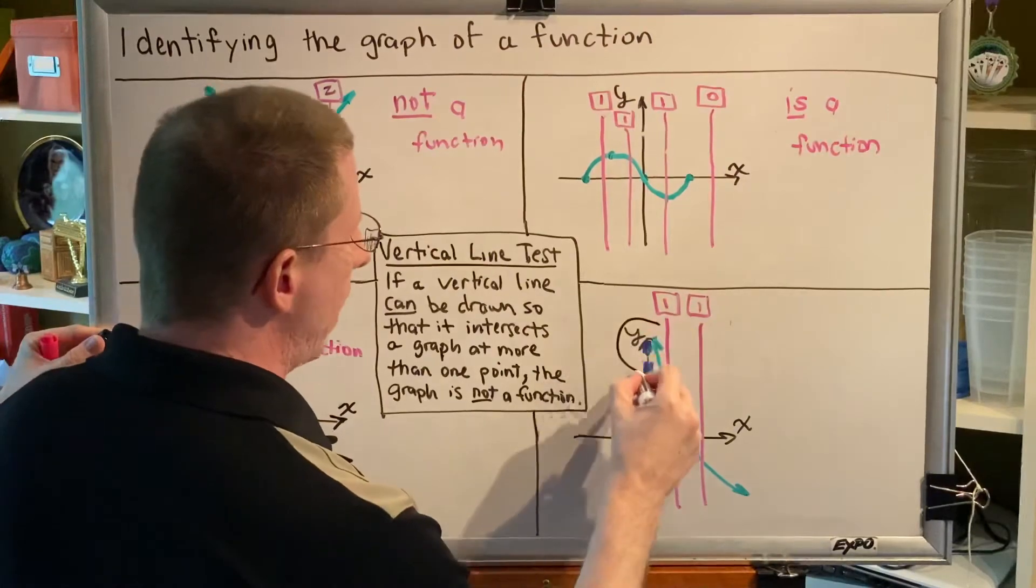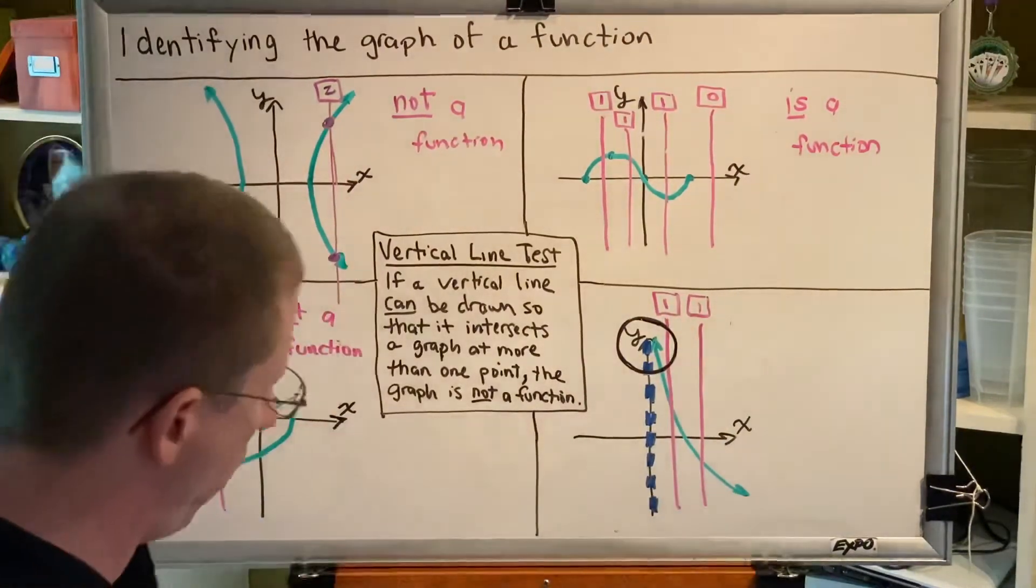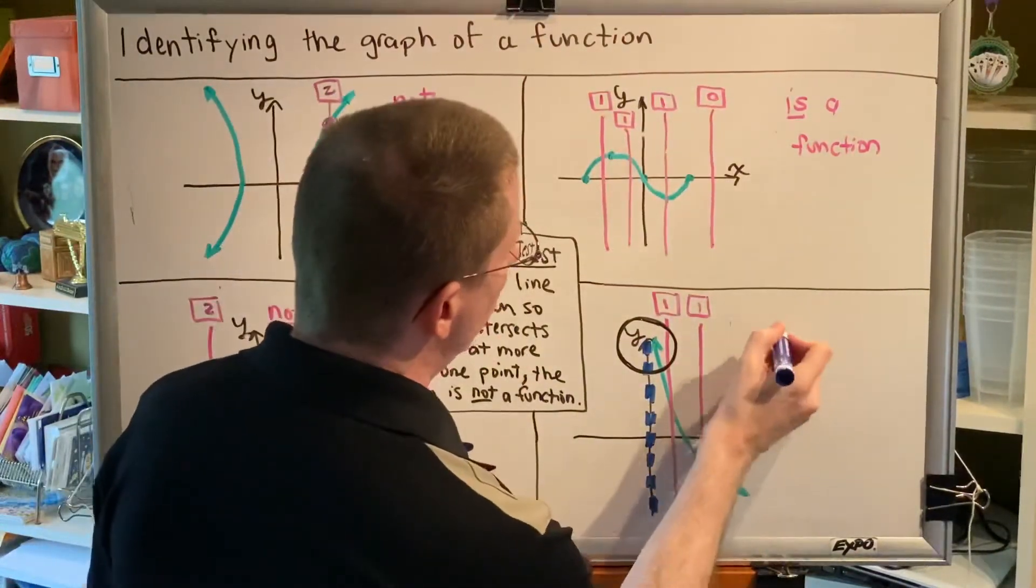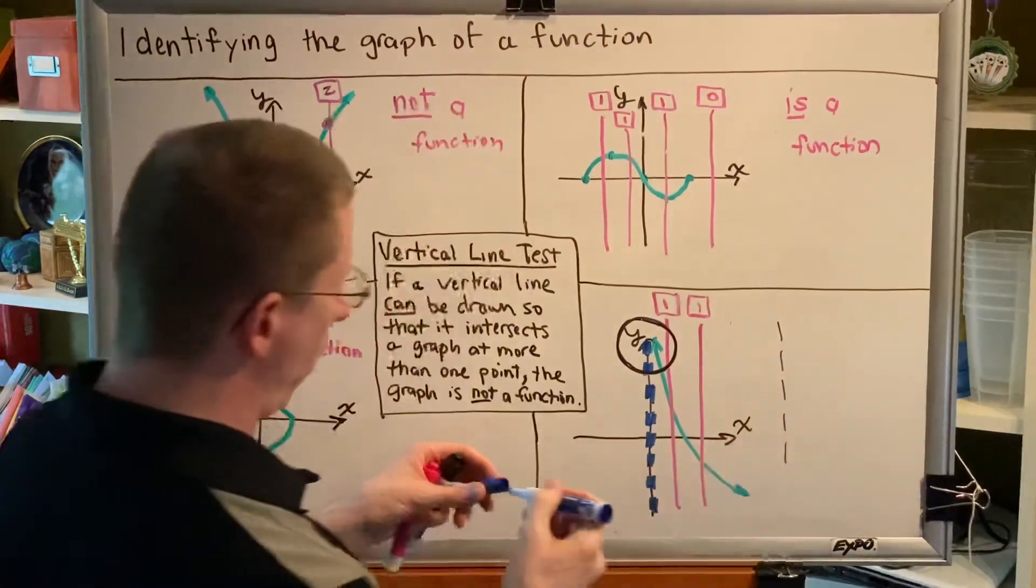If I were to create a zoom circle here and zoom in very tightly on this particular part of the graph, what I would see is my blue asymptotic line, my blue vertical line,